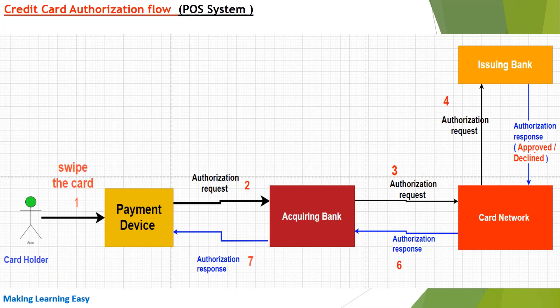After the card network receives the response from the issuing bank, it forwards the response to the acquiring bank. The acquiring bank checks the response and if it is approved, it sends a successful response to the payment device. If it is declined, the same is also sent to the payment device. The point of sale person will give you your parcel if it is approved. If it is declined, they will ask you to try again or use a different payment method.